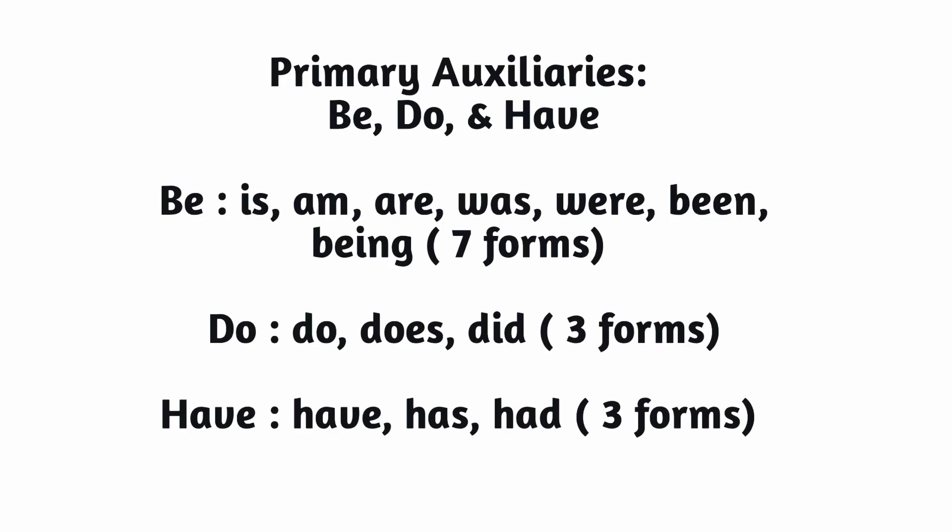Have a look at this. Number one: be. There are seven forms for this primary auxiliary — is, am, are, was, were, been, being.